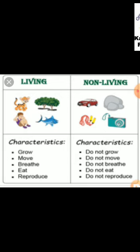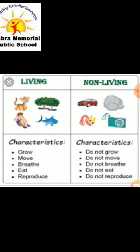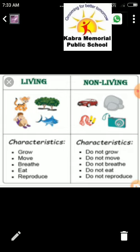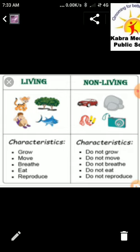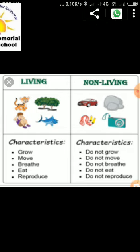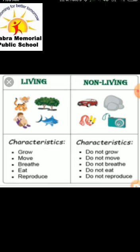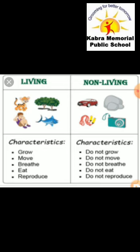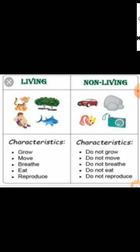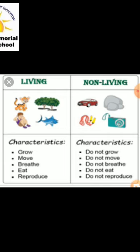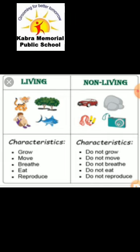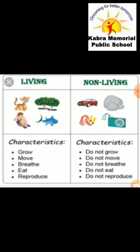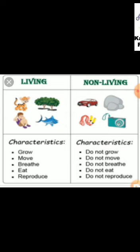Living things can eat because they get hungry. The fifth characteristic is reproduce. Reproduction means producing your own kind — that is known as reproduction of human beings.